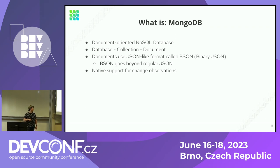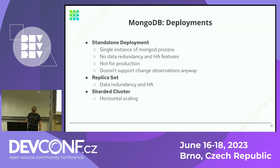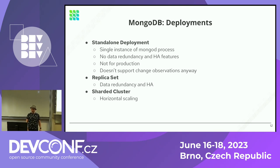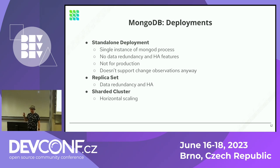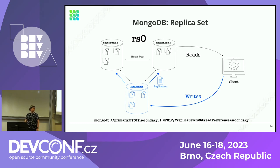Before we get to extracting data, we need to talk about how the database can be run. First there is the standalone deployment, but that's not really meant for production — it's recommended just for testing and development environments. Since there isn't any way to actually extract data changes from standalone deployments, we don't cover it. The basic unit of MongoDB deployment is the replica set, which provides basic data redundancy and HA features. And then if you want to achieve horizontal scaling of your data, you can use MongoDB sharded cluster deployments.